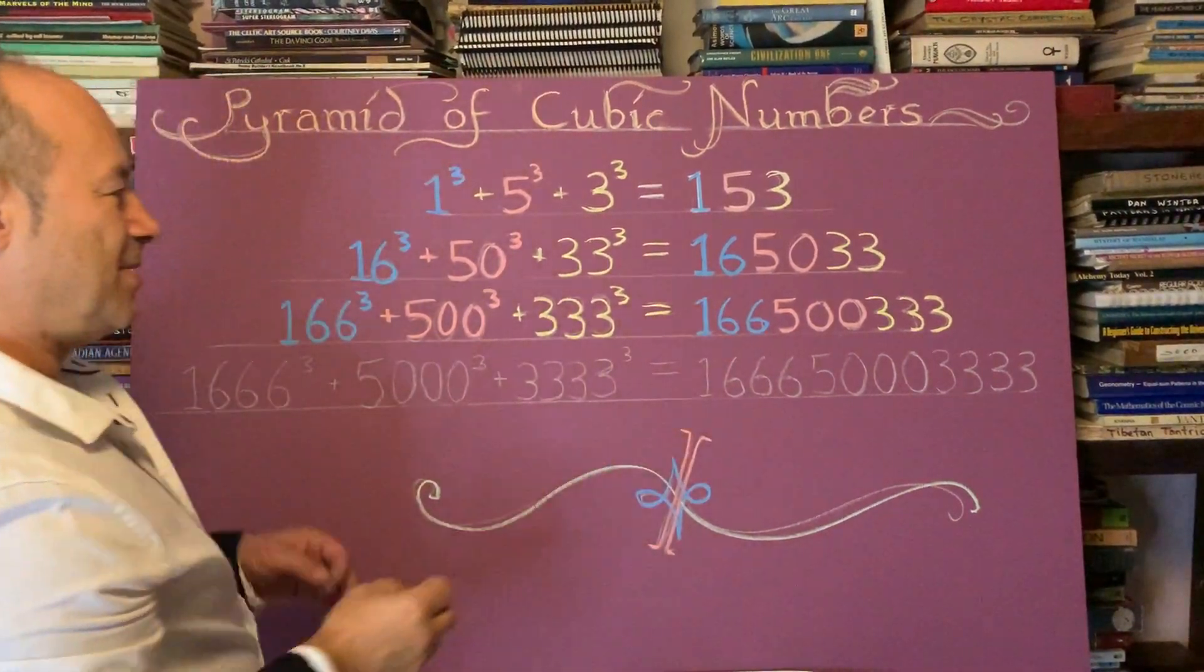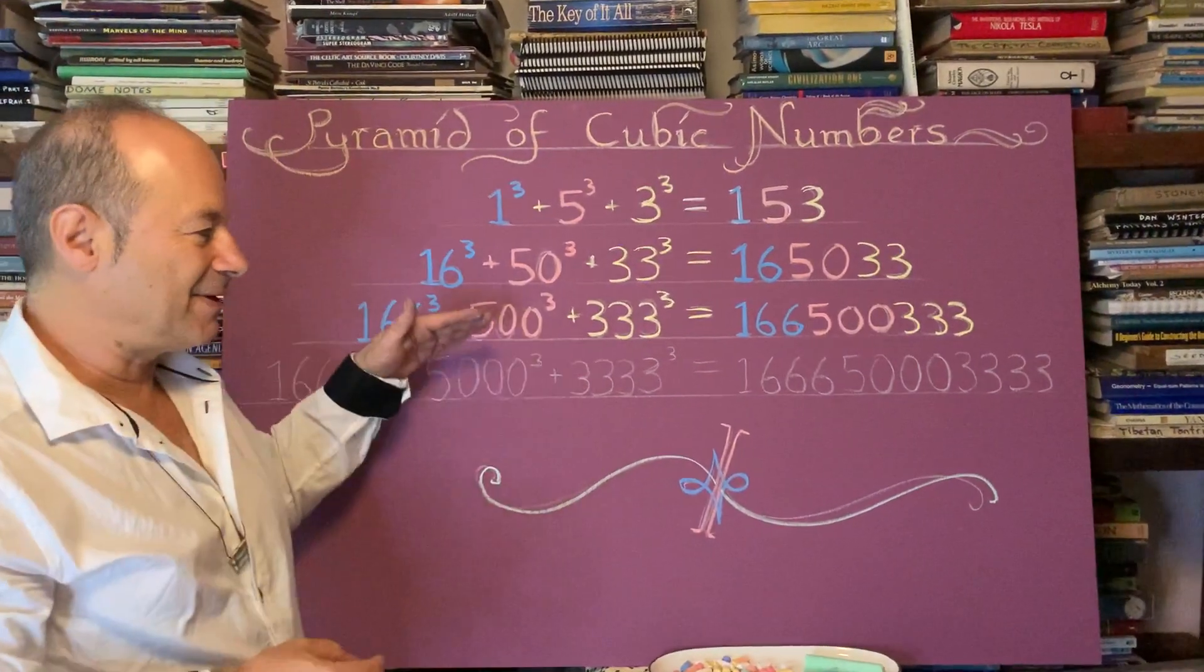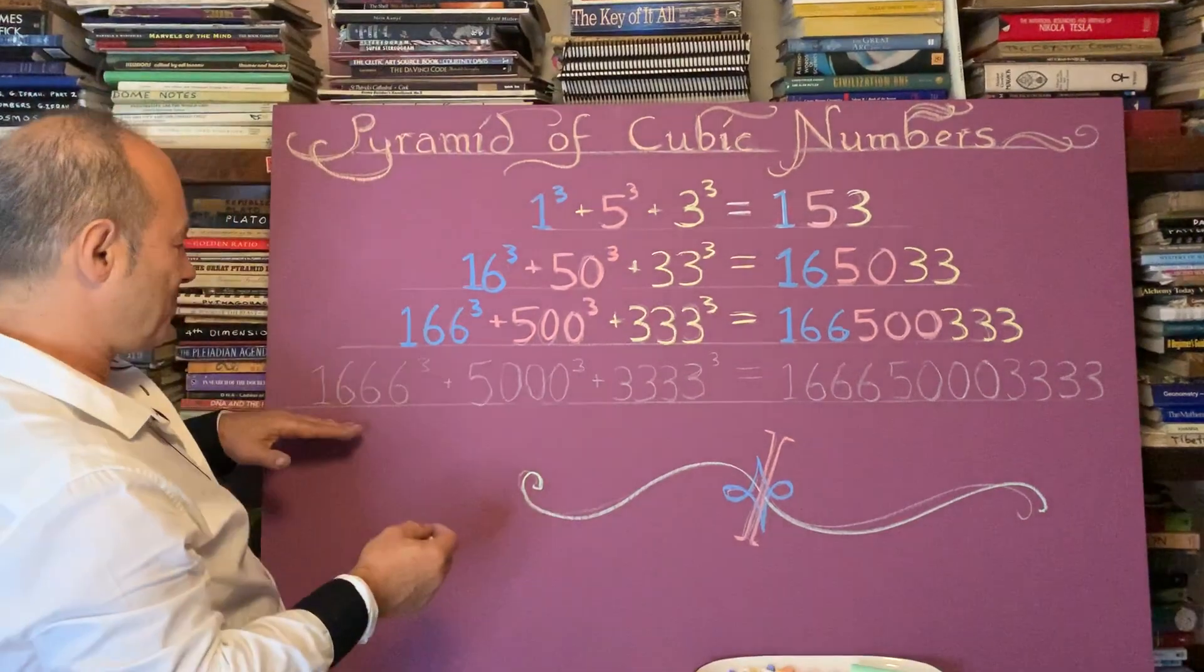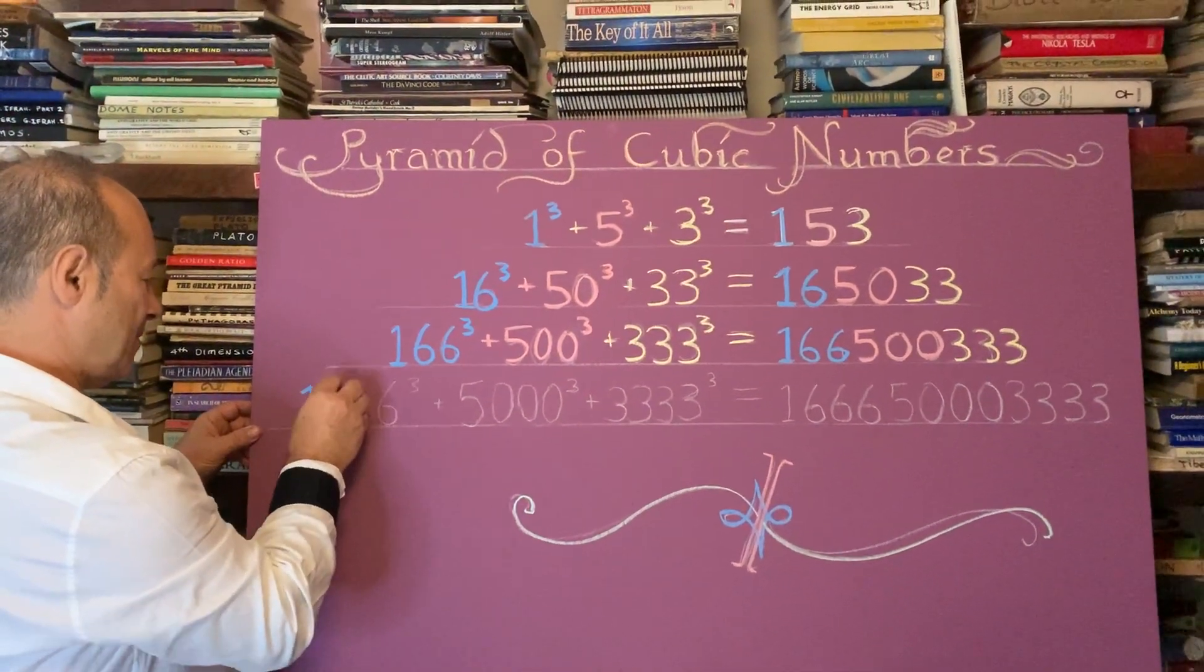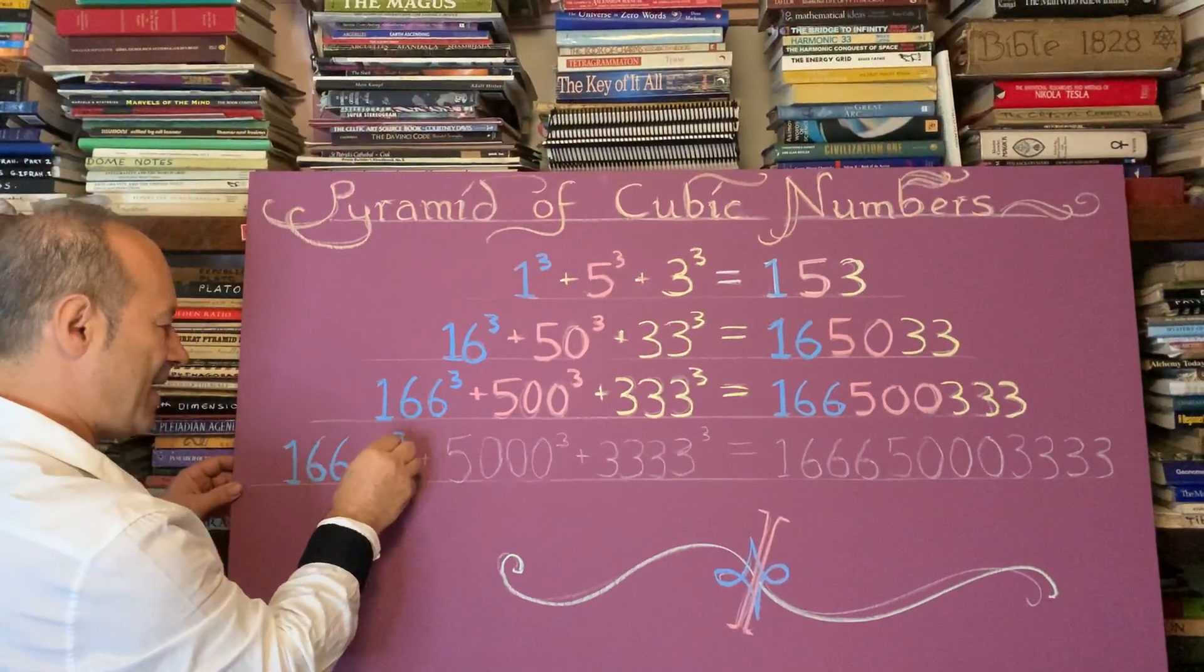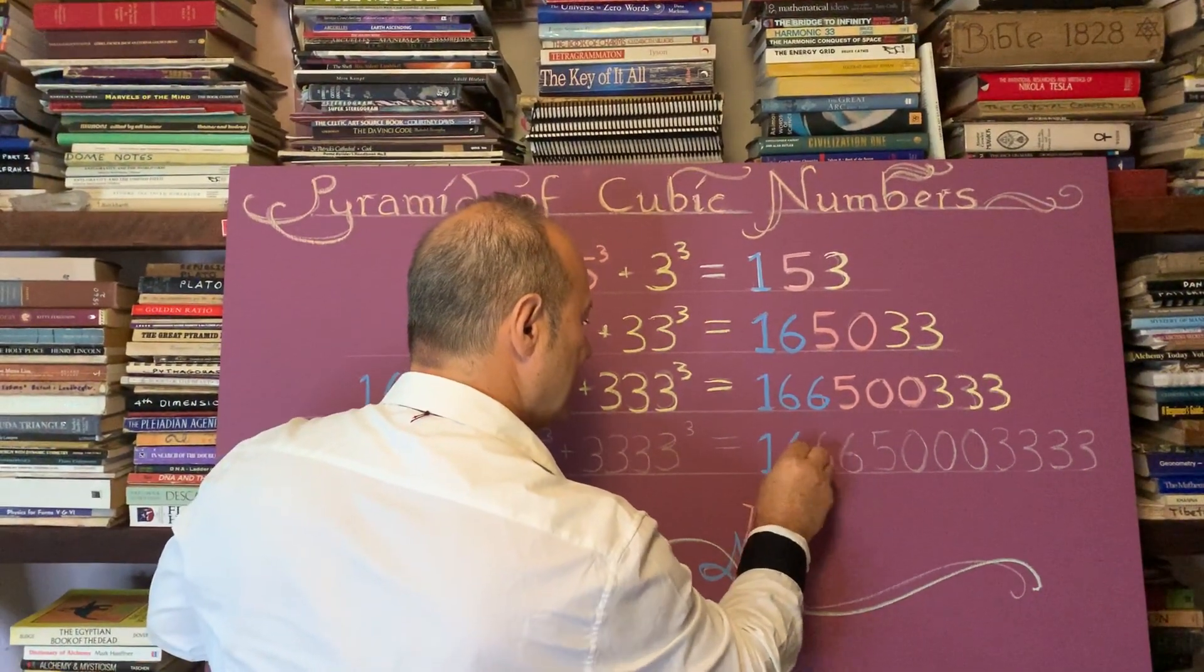And just to confirm that this keeps going as far as we know, obviously I haven't done this on the computer further and further. So up to this point here, we take 1666 and we cube that, we still get the 166 over here. Isn't that amazing?